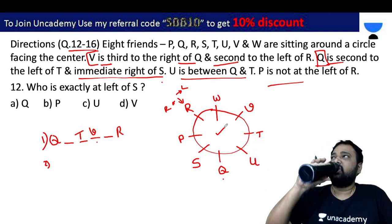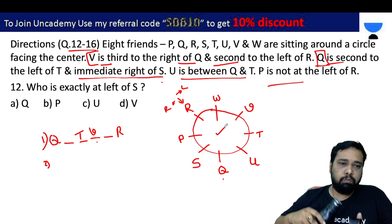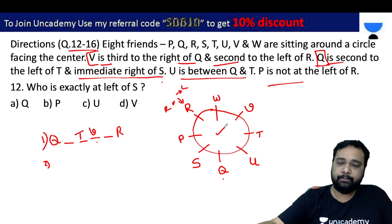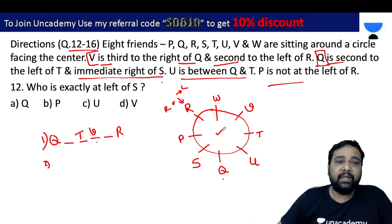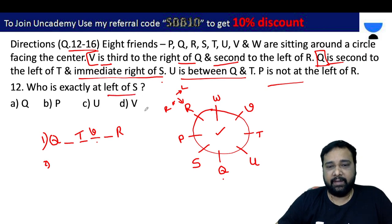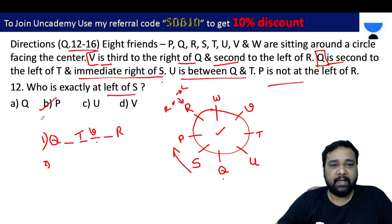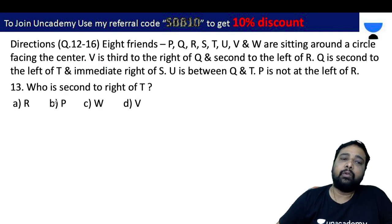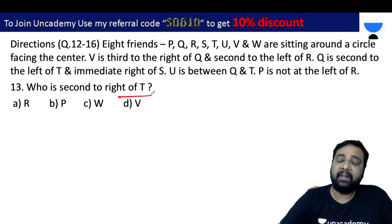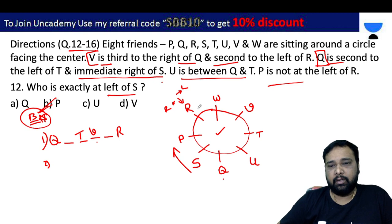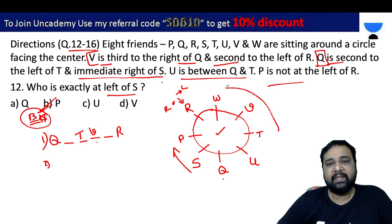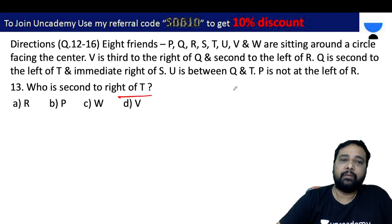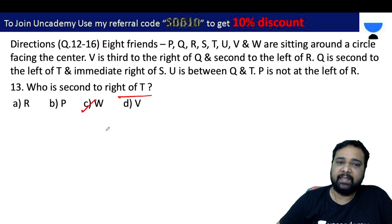Problem 12: Who is exactly to the left of S? S's left side is P. The answer is B. Problem 13: Who is second to the right of T? T is at the right side second position. The answer is C.